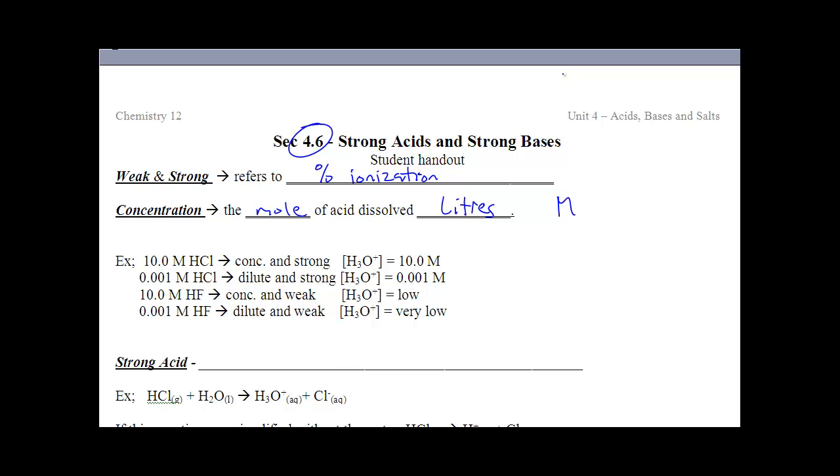We're going to use those words very specifically. You can be concentrated and strong, like HCl is a strong acid, and 10 molar, pretty strong. Or, you can be dilute and still strong. HCl is still a strong acid, and we'll explain why in a minute. But the concentration is very, very low.